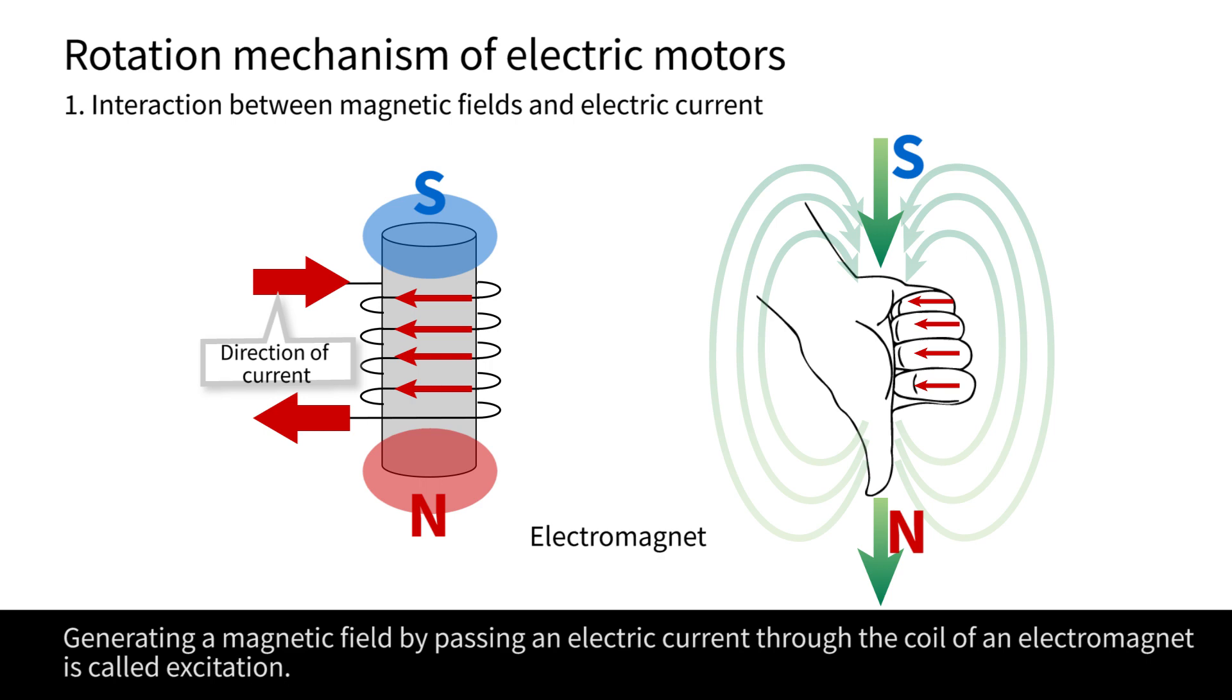Generating a magnetic field by passing an electric current through the coil of an electromagnet is called excitation.